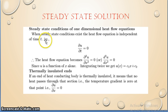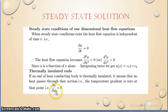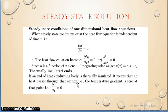The steady state condition means heat flow is independent of time t, so ∂u/∂t = 0, which also makes the second derivative zero. Therefore u(x) = c₁x + c₂. Thermal insulation at an end means no heat passes through that section, i.e., ∂u/∂x = 0. The key function to find in one-dimensional heat flow equations is u(x) = c₁x + c₂.